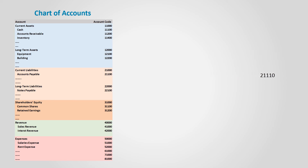The same thing applies to liabilities. If we take accounts payable as an example, it starts with two as it is a liability account. Since it falls in the current liabilities subcategory, it takes one — so it starts with two-one. Accounts payable is the first main account in current liabilities, so it takes another one, giving us two-one-one, then we add zero-zero. With two digits at the end, we can add up to 99 accounts payable subaccounts — for accounts payable 1 it would be two-one-one-zero-one, for accounts payable 2 it would be two-one-one-zero-two, and so on.